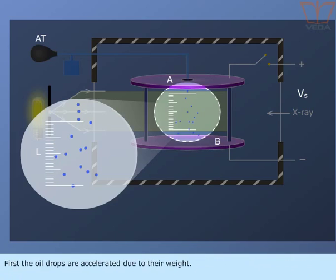First the oil drops are accelerated due to their weight. The weight of the drop is balanced by the viscous force. Now the drops attain a terminal velocity which is measured.